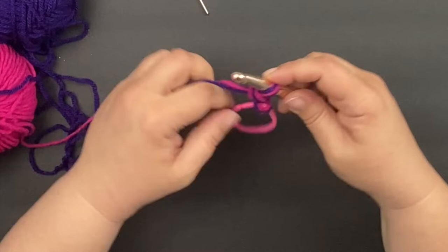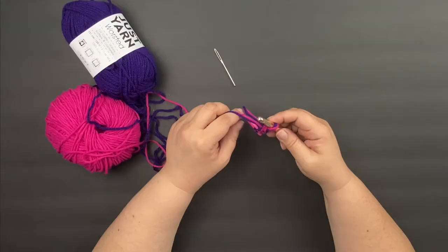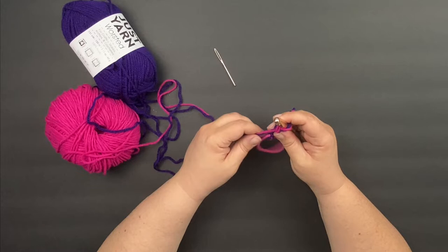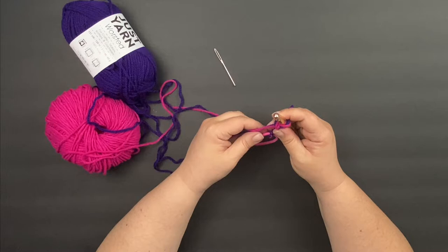Now all we do for the rest of the project is double crochet around the circle. We're just going to keep going. You're going to notice at one point it's going to get full, so we want to give it some ruffle. When you get to that point, we're just going to scrunch up our yarn and keep going.